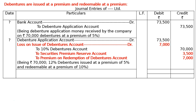Being Rs. 70,000, 12% debentures issued at a premium of 5% and redeemable at a premium of 10%, that is 70,000 into 10% equals 7,000, and 5% was only on premium on issue of debentures. The narration: being Rs. 70,000, 12% debentures issued at a premium of 5% and redeemable at a premium of 10%. The journals are totaled — totalling is 1,54,000 in both debit and credit columns — and this is the final answer.